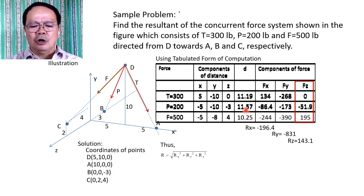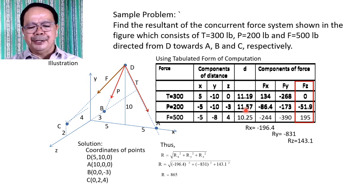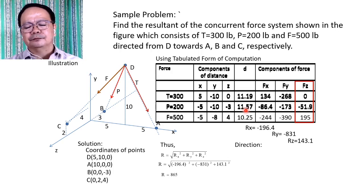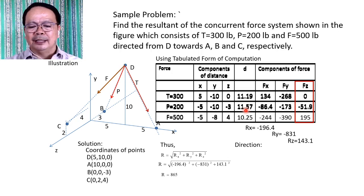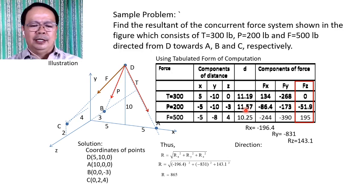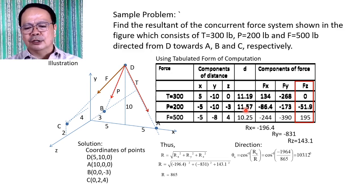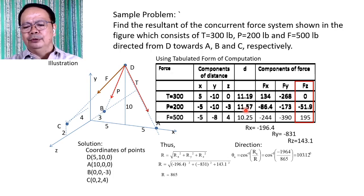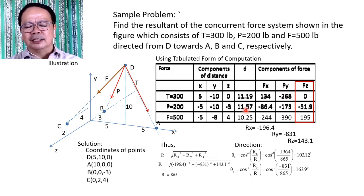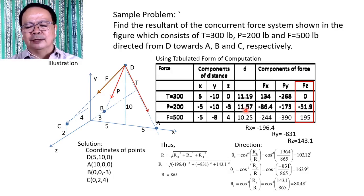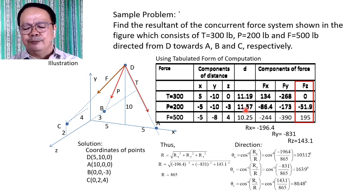Solving for the resultant, R = √(Rx² + Ry² + Rz²). Substituting the values gives R = 865. To get the direction of R, the angles are computed as: θx = arccos(Rx / R) = arccos(−196.4 / 865) = 103.12°; θy = arccos(Ry / R) = arccos(−831 / 865) = 169°; and θz = arccos(Rz / R) = arccos(143.1 / 865) = 80.48°.